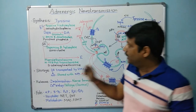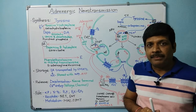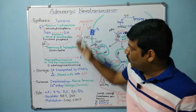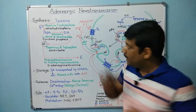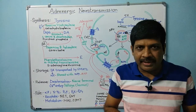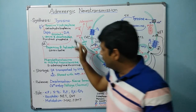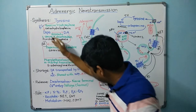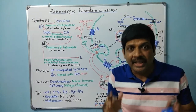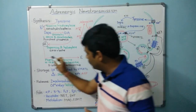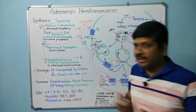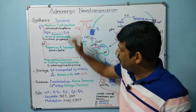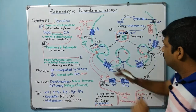DOPA is converted to dopamine by the enzyme aromatic L-amino acid decarboxylase, with pyridoxal phosphate as the cofactor. So tyrosine gets converted to dopamine by hydroxylase and decarboxylase. Then dopamine is converted to norepinephrine by dopamine beta-hydroxylase, with ascorbate as the cofactor. Norepinephrine is then converted to epinephrine specifically in chromaffin cells of the adrenal gland, by the enzyme phenylethanolamine N-methyltransferase (PNMT), with S-adenosylmethionine as the cofactor.